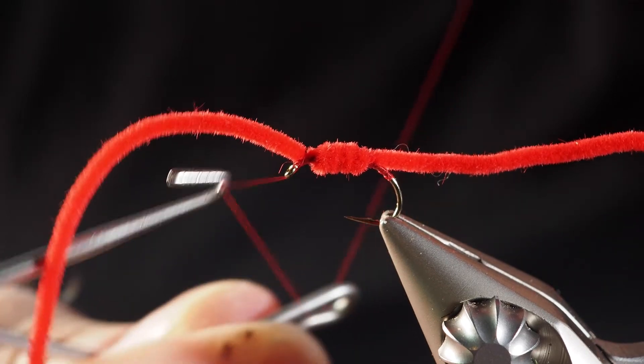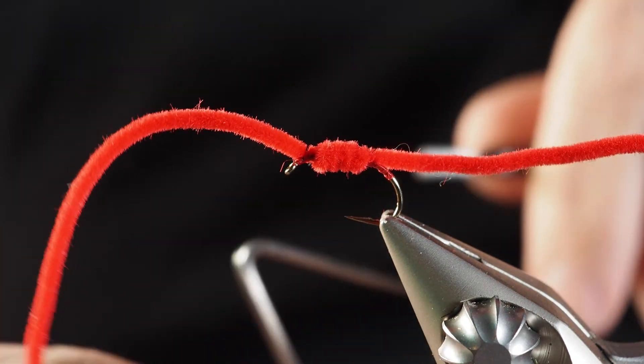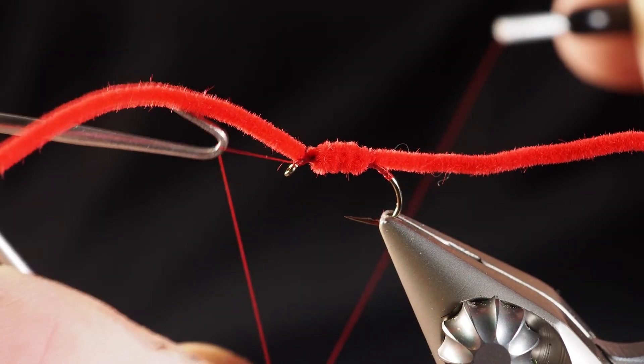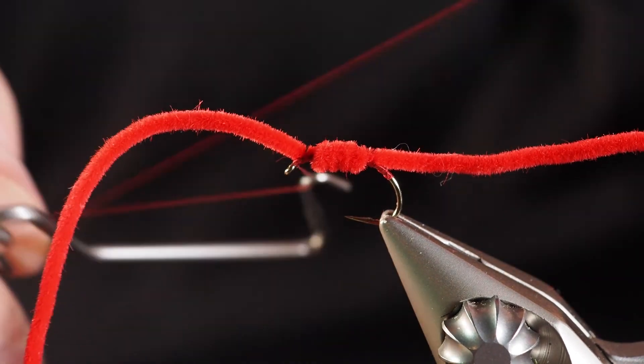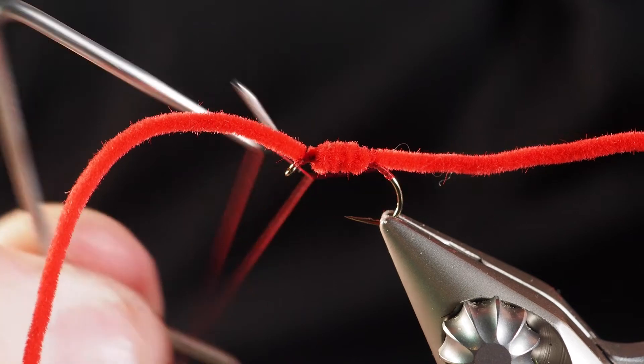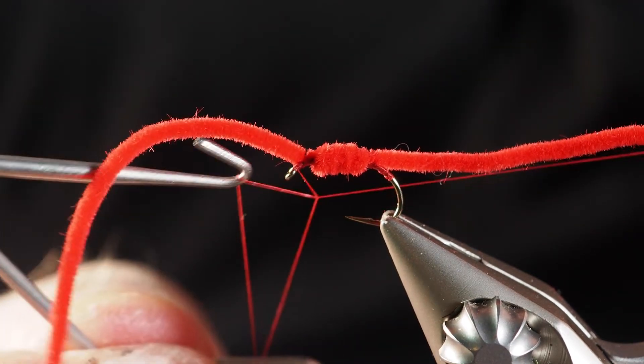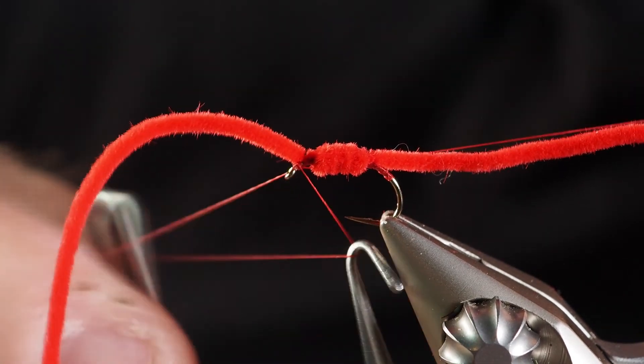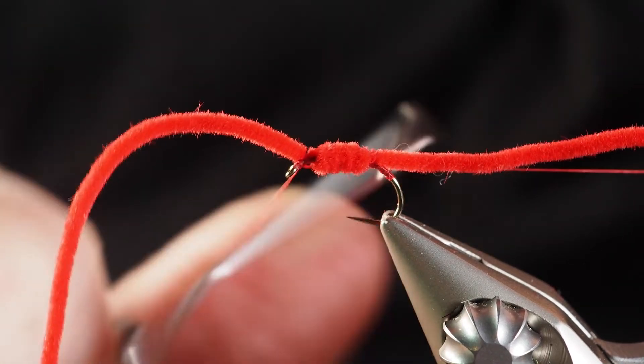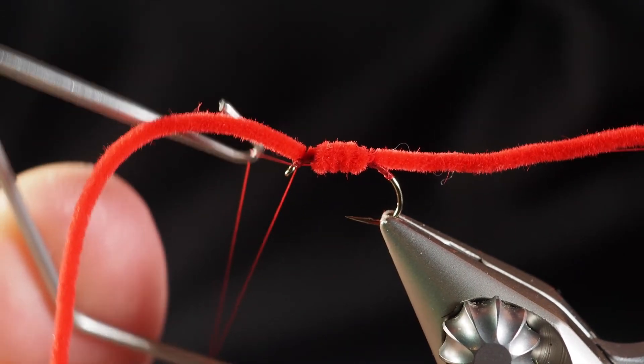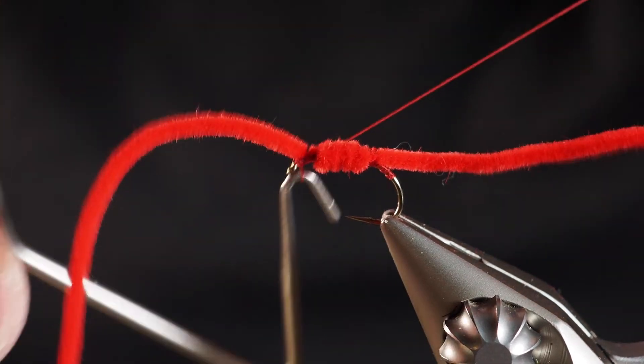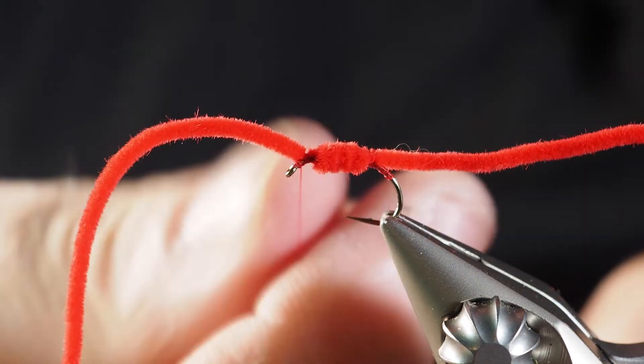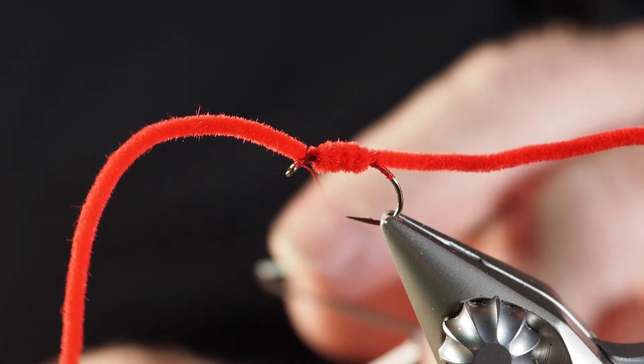So I do want to kind of get behind that other material here. Just a couple thread wraps, it's not going to take too much. Just like so. Go ahead and let that come off of our hook, we'll just pull that knot tight.